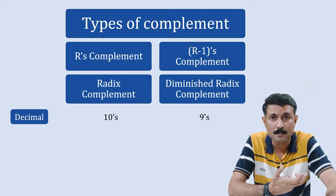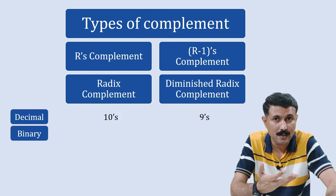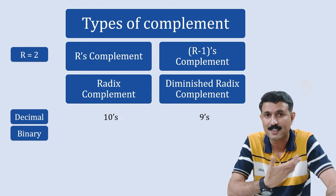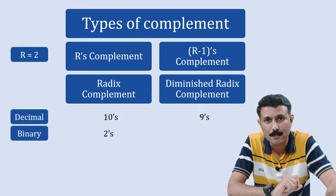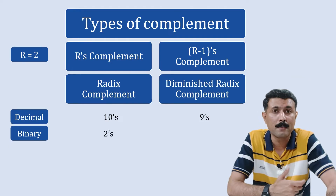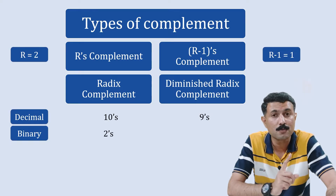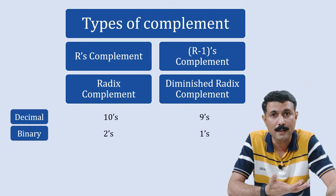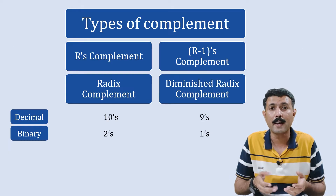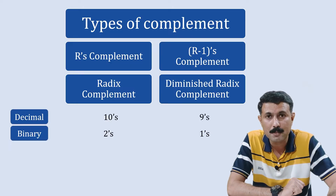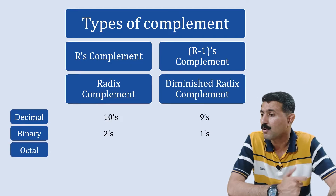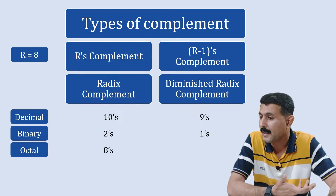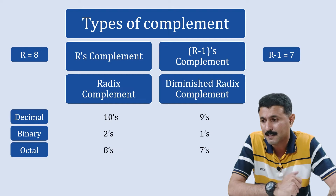In the binary number system, the radix or base is 2. So r's complement is 2's complement, and r-1's complement — since 2 minus 1 equals 1 — is 1's complement. That is why we have 2's and 1's complement in binary. In the octal number system, the radix is 8, so r's complement is 8's complement and r-1's complement is 7's complement.